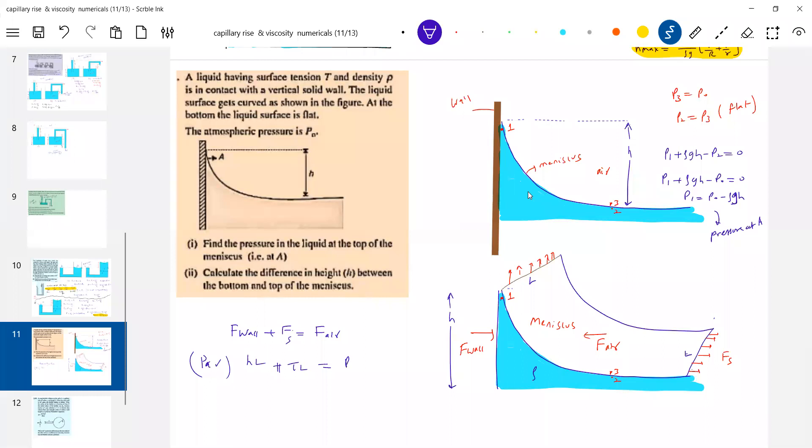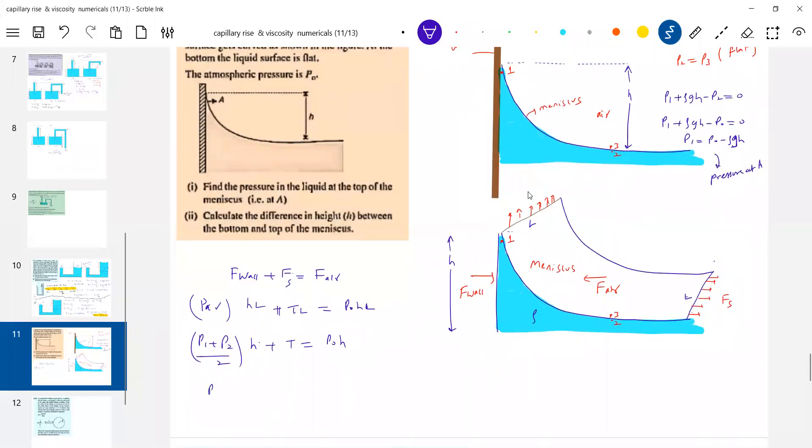P naught A. We don't know average pressure. What is the pressure? Average pressure is P1 plus P2 by 2. L get cancelled. So H times surface tension plus P naught H. Solving this, what is pressure at 1? P naught minus ρgh. So this will be P naught minus ρgh by 2 into H plus T equal to P naught H.